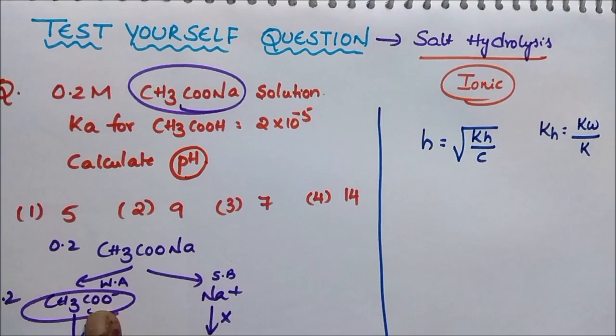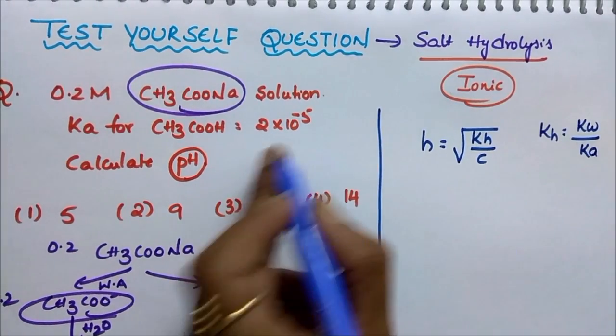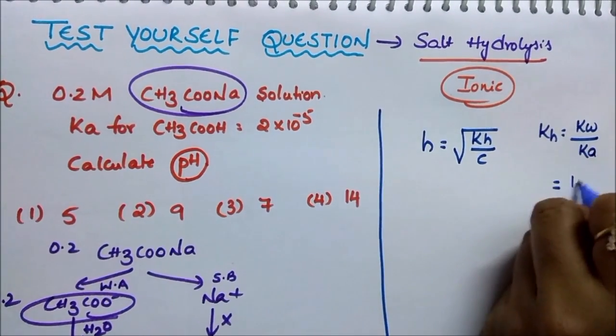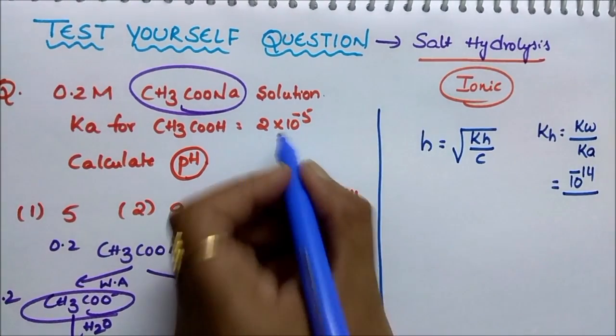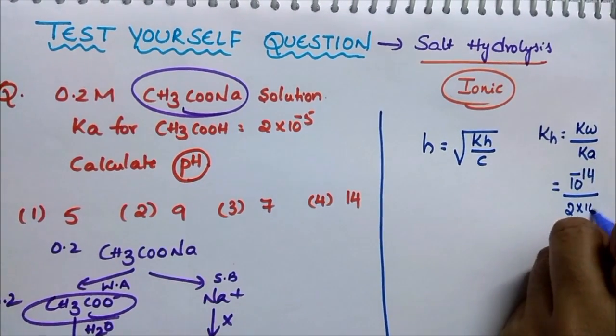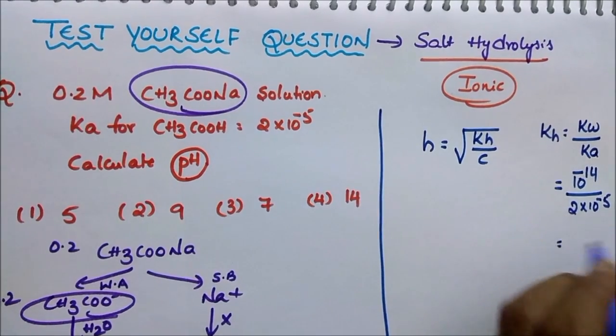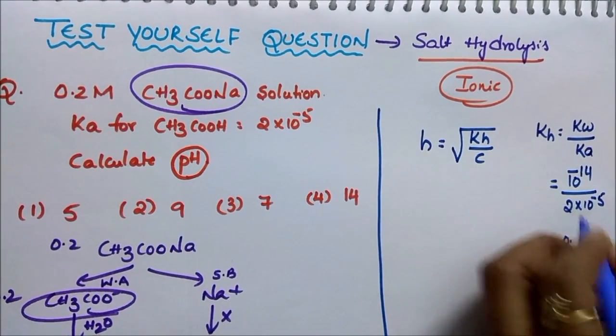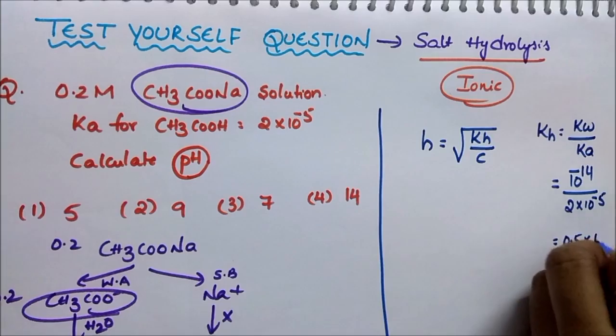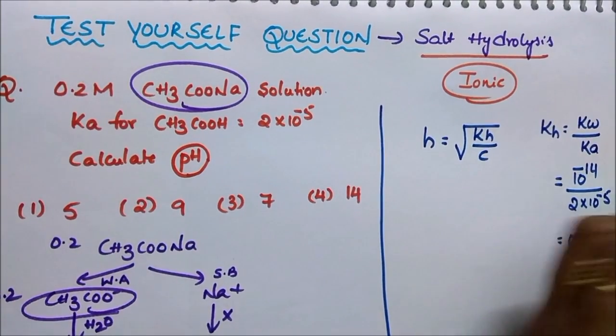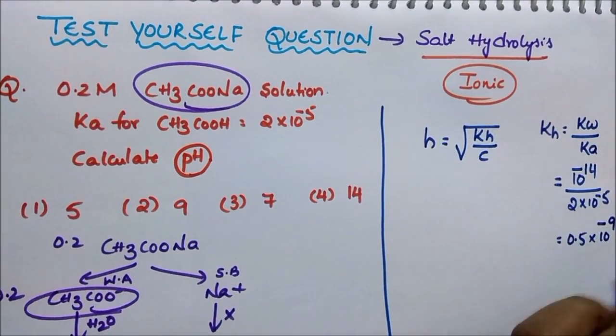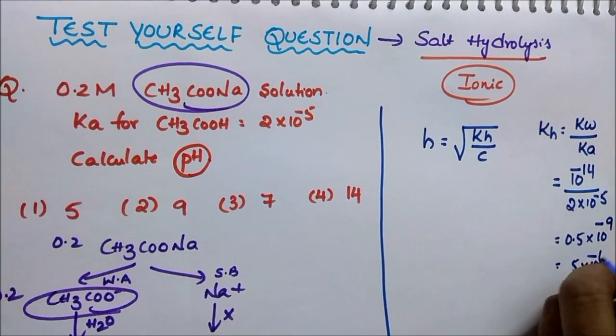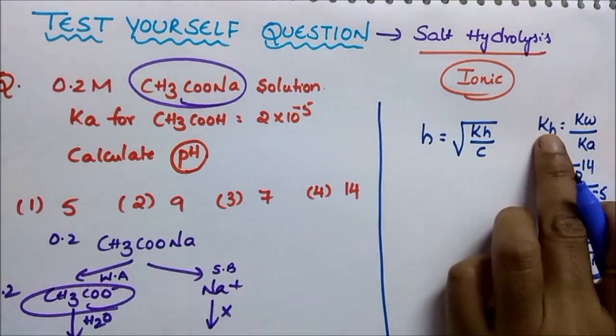It is a salt of weak acid, so I take KA here which is already given in the question. So KW is 10 power of minus 14, KA is 2 into 10 power of minus 5. If you solve, 1 by 2 is 0.5 into 10 power of minus 9, so it will be 5 into 10 power of minus 10. This is KH.